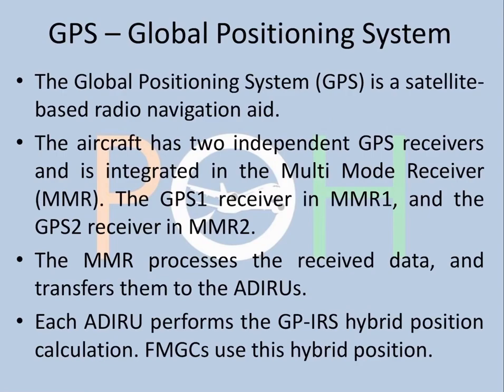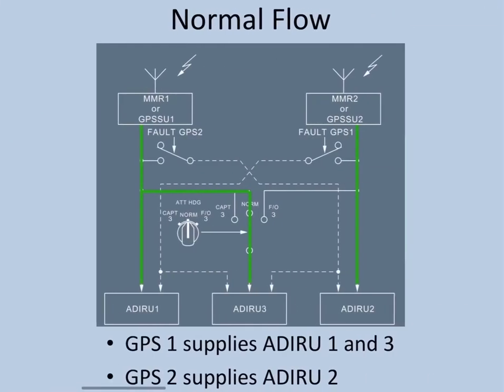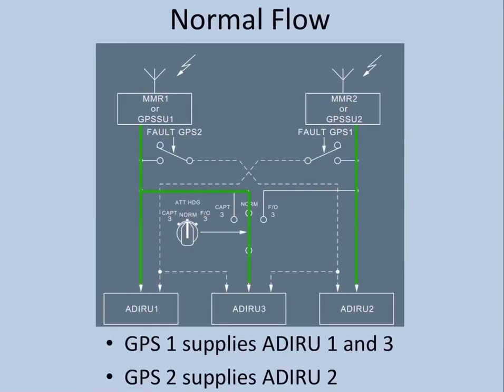Each ADIRU will perform the GP/IRS hybrid position, which is your GPS plus mixed IRS combination. The aircraft — specifically the FMGC — uses this hybrid position for the position computation of the aircraft. So let's look at the normal flow.